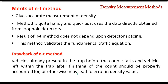The merits of the NT method are that it gives quite accurate measurement of density, is quite handy and quick as it uses data directly obtained from loop detectors, and the result does not depend on detector spacing. This method also validates the fundamental traffic equation. A drawback is that vehicles present in the trap before the count starts and vehicles that leave the trap after the count finishes must be properly accounted for, otherwise it may lead to error in the density value.